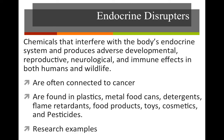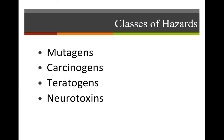Endocrine disruptors affect your endocrine system — including your reproductive, neurological, and immune systems. There are natural things that can also be linked to cancer-causing agents. Some endocrine disruptors include paints, plastics, detergents, flame retardants, food additives, toys, and even cosmetics. They have found these endocrine disruptors in various everyday products.